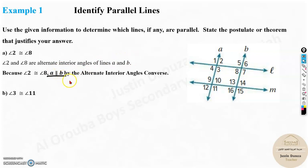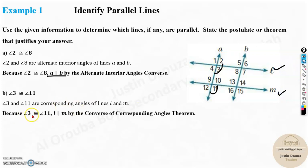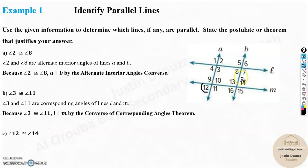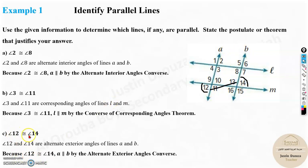Similarly, angles 3 and 11 are corresponding angles with respect to lines L and M. Since angles 3 and 11 are congruent, lines L and M are parallel by the Corresponding Angles Converse. Next, angles 12 and 14 are alternate exterior angles of lines A and B. Because angle 12 is congruent to angle 14, lines A and B are parallel by the Alternate Exterior Angles Converse.